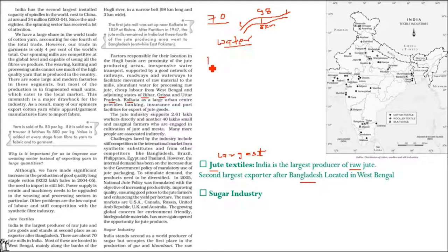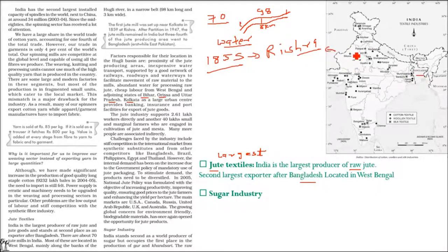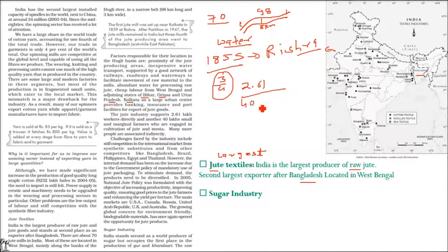The first jute mill was set up near Kolkata at Rishra in 1859. After partition, three-fourths of the jute-producing area went to Bangladesh, which is why India is now the second largest exporter. The jute industry supports 2.61 lakh workers directly and 40 lakh small and marginal farmers who are involved in production of jute and Mesta. Challenges include competition from synthetic fiber substitutes and competition from Bangladesh, Brazil, Philippines, Egypt, and Thailand.